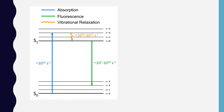In this figure, it is shown that the absorption has a lifetime of 10⁻¹⁵ seconds — the molecule moves to the higher state. Then, due to vibrational relaxation with a timescale of 10⁻¹⁰ to 10⁻¹² seconds, the electron moves to lower states. Finally it moves to the lowest vibrational state, which takes a longer time before emission.